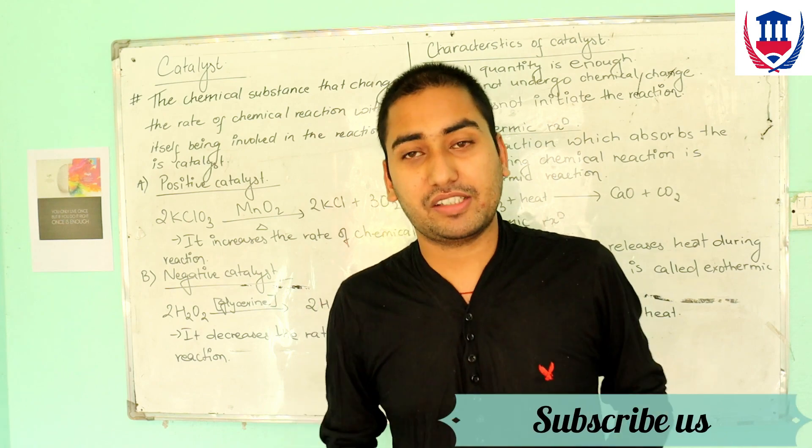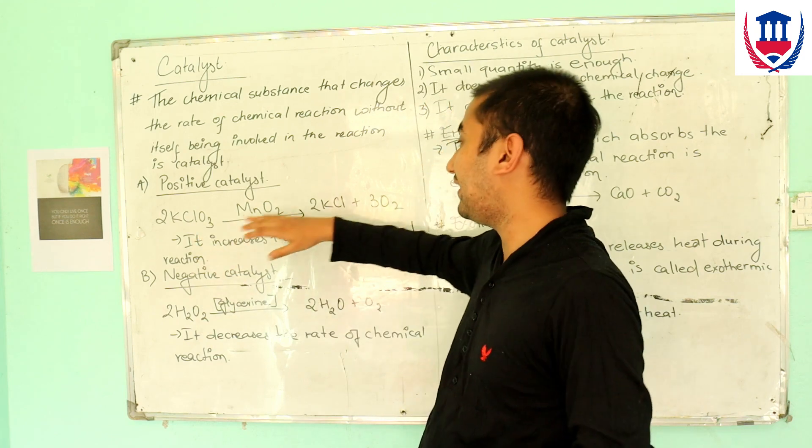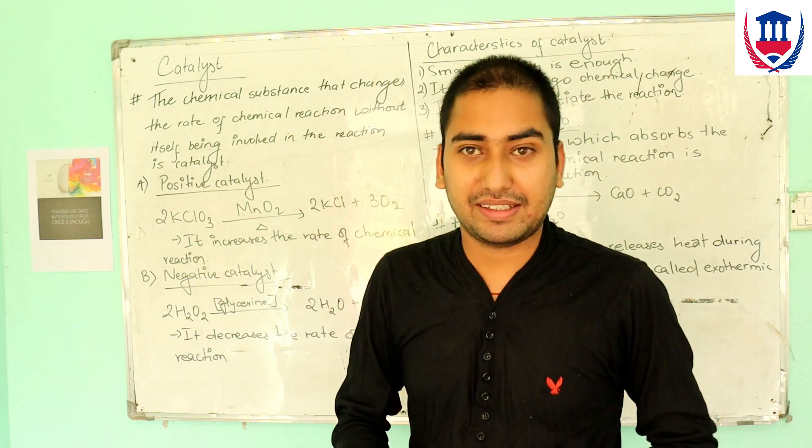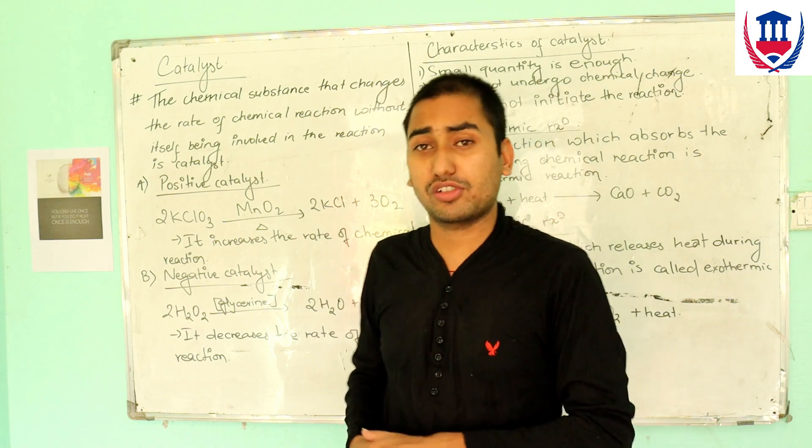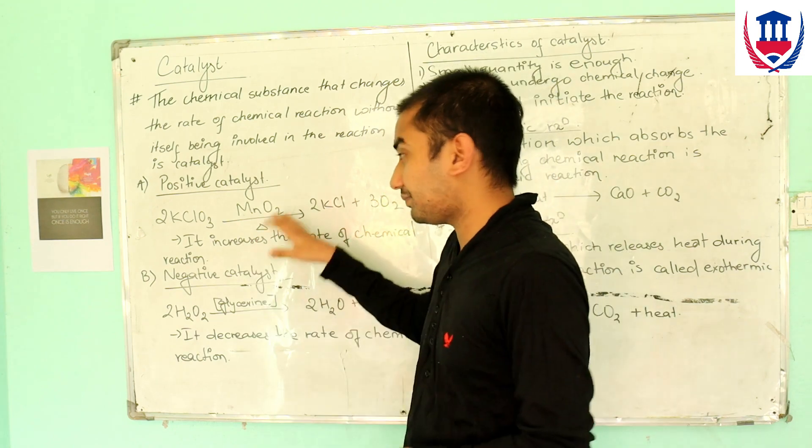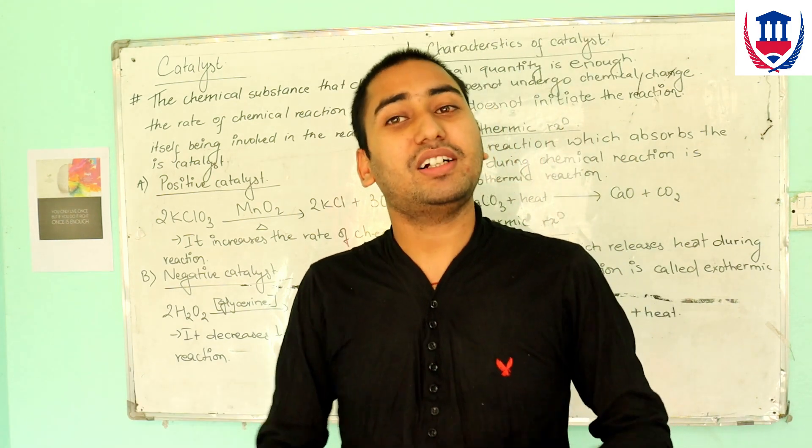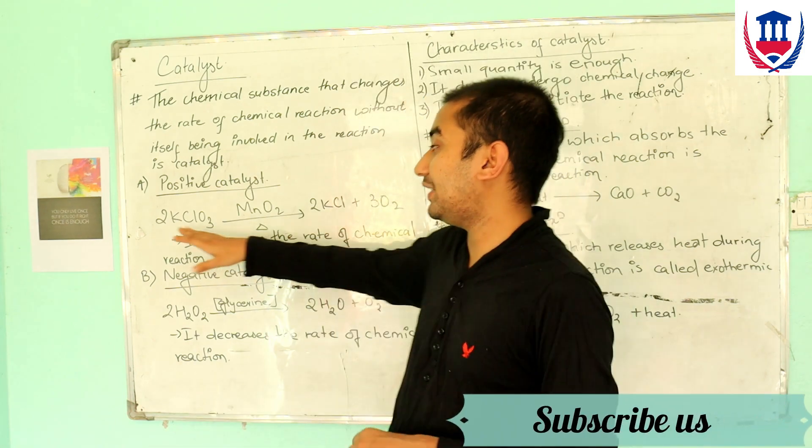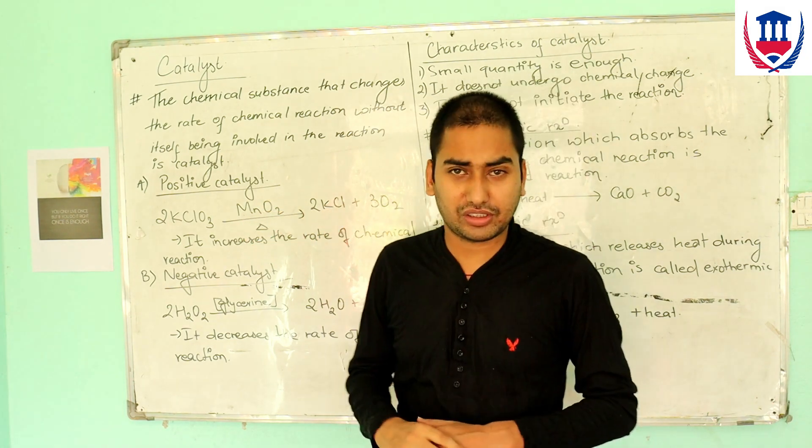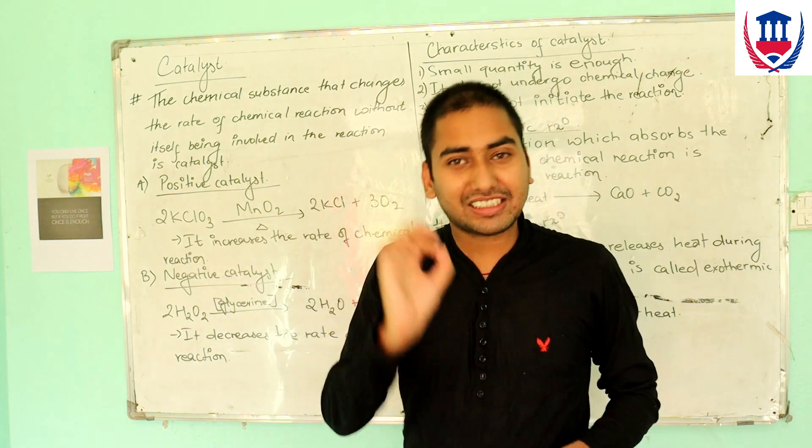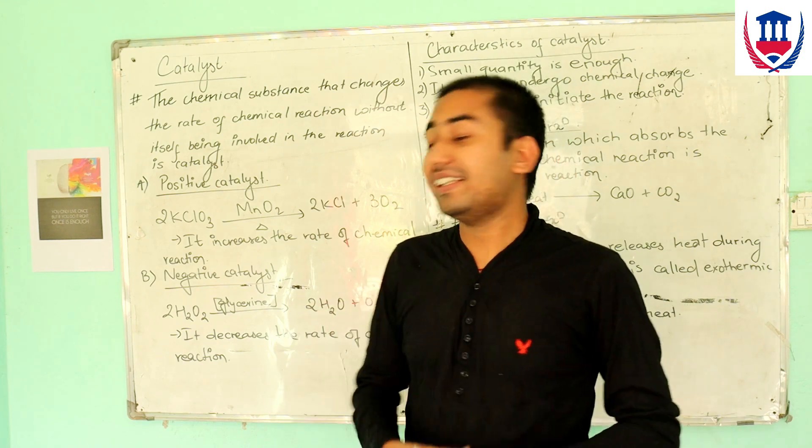An example of positive catalyst is MnO2, manganese dioxide. The reaction is 2KClO3 with MnO2 as catalyst disintegrates into 2KCl plus 3O2. This is a positive catalyst which increases the rate of reaction.